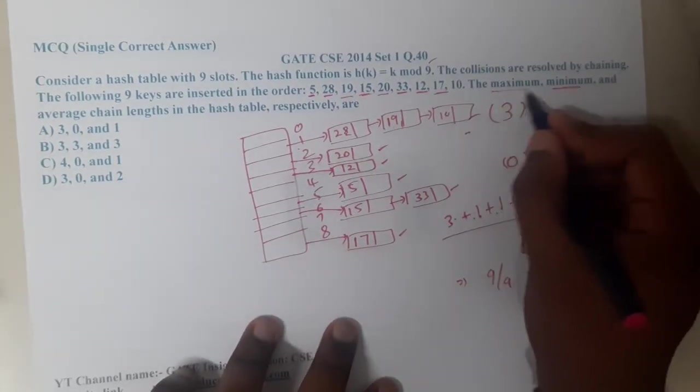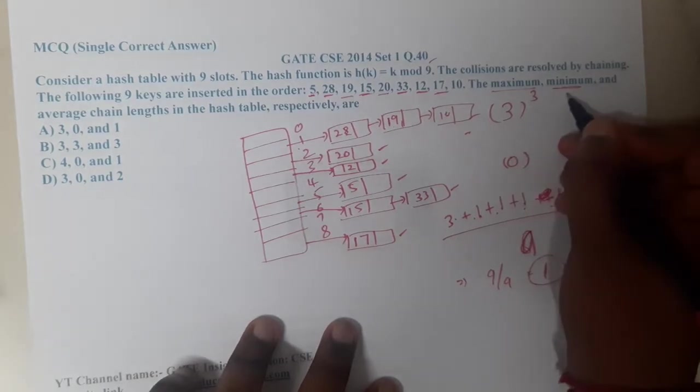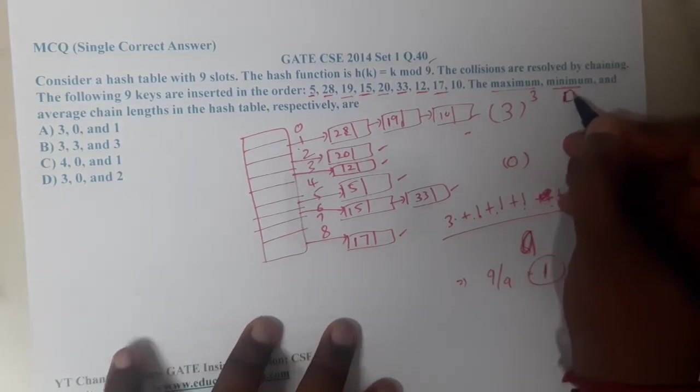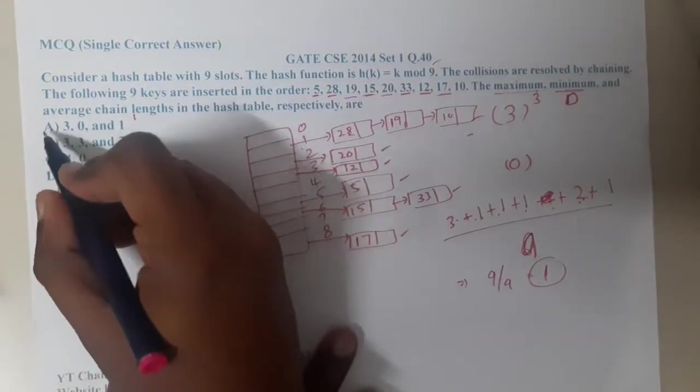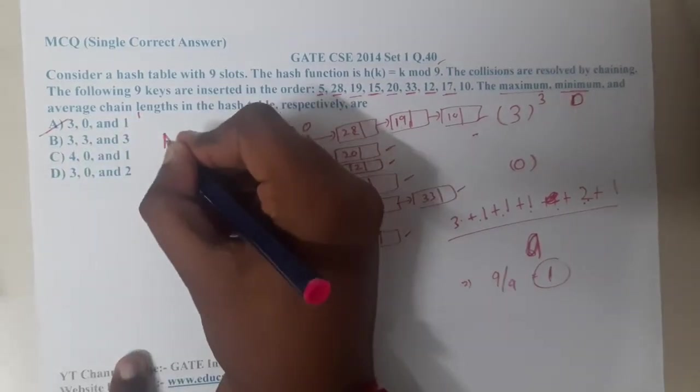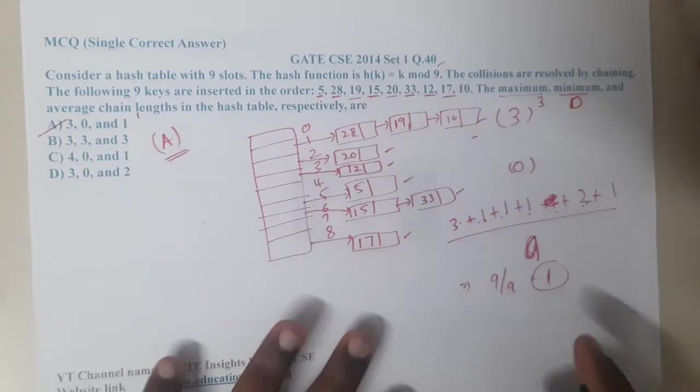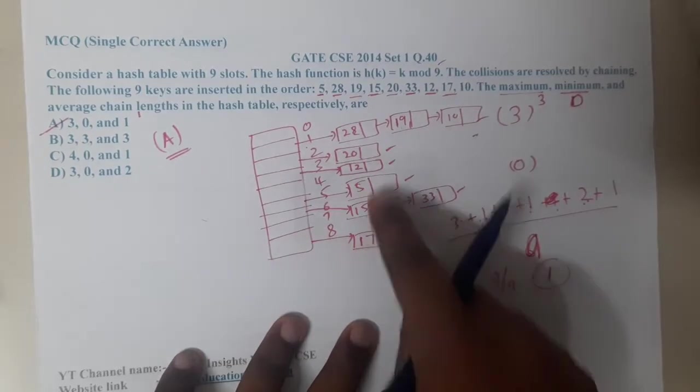So 3 plus 1, 4, 5, 6, 7, 8, 9. So it is 9 by 9. What will be the result? It is nothing but 1. So the value - maximum is 3, minimum is 0, and the average is 1. So that order is nothing but A. Got it?